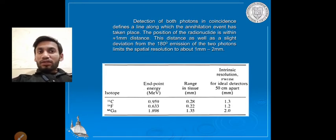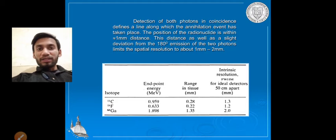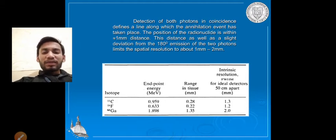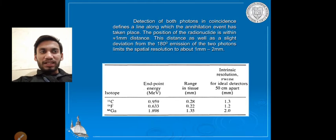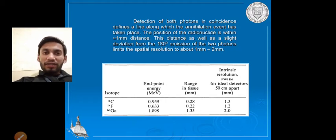The detection of both photons in coincidence defines the line along which the annihilation event took place. The radionuclide position is approximately 1 mm distance, but this varies with tissue strength and thickness. The slight deviation from the 180-degree emission of the two photons limits spatial resolution to 1–2 mm.